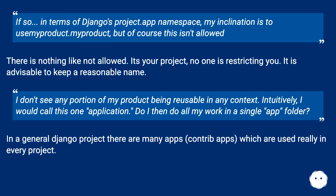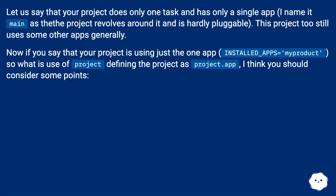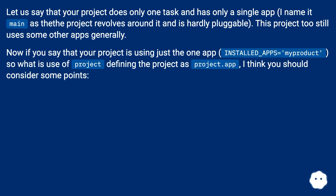In terms of Django's project.app namespace, there is nothing like 'not allowed' — it's your project, no one is restricting you. It is advisable to keep a reasonable name. In a general Django project there are many contrib apps used in nearly every project. If your project does only one task and has only a single app, I name it 'main' since the project revolves around it and is hardly pluggable. If installed_apps equals my_product, what is the use of defining the project as project.app?